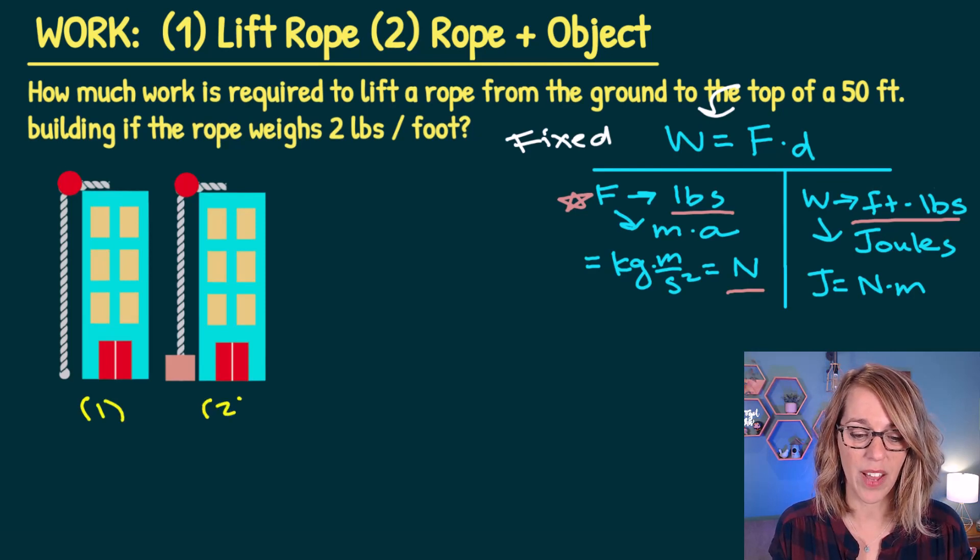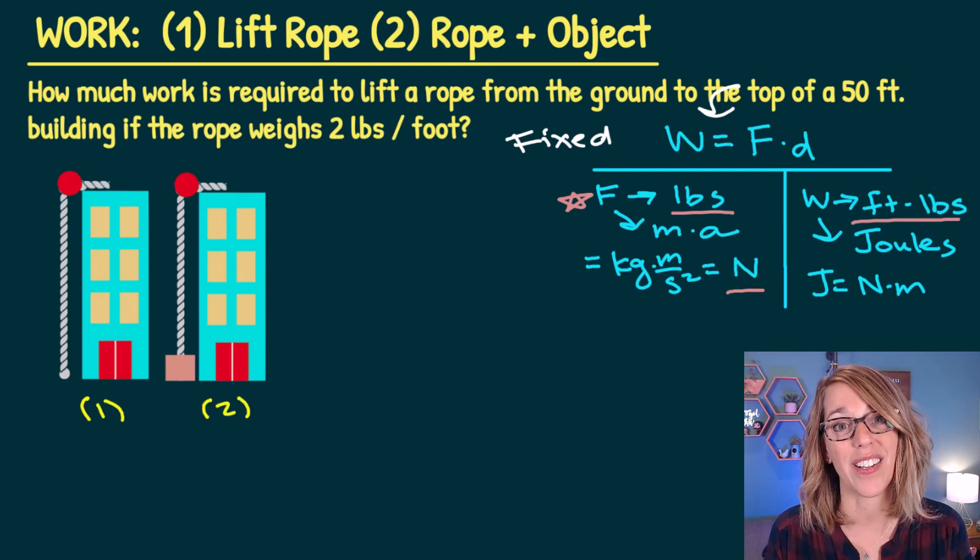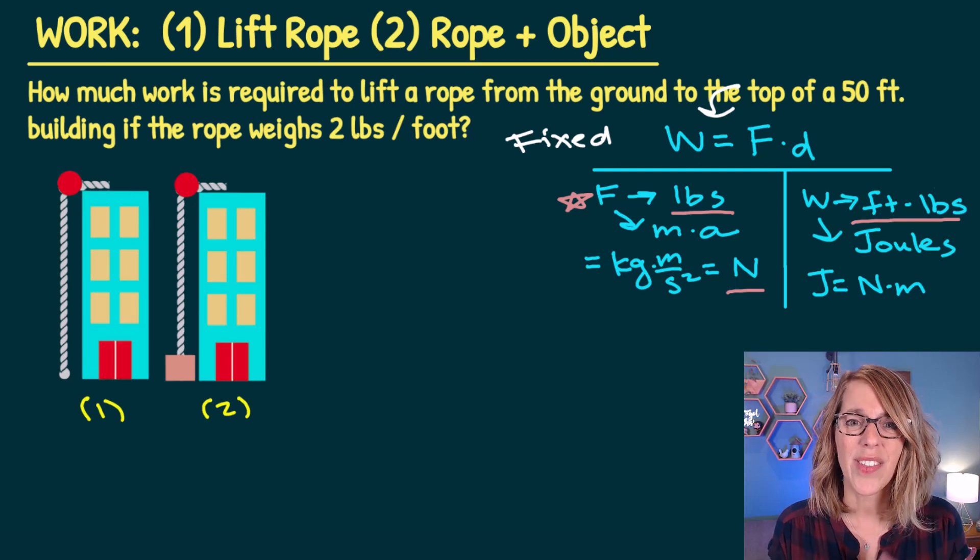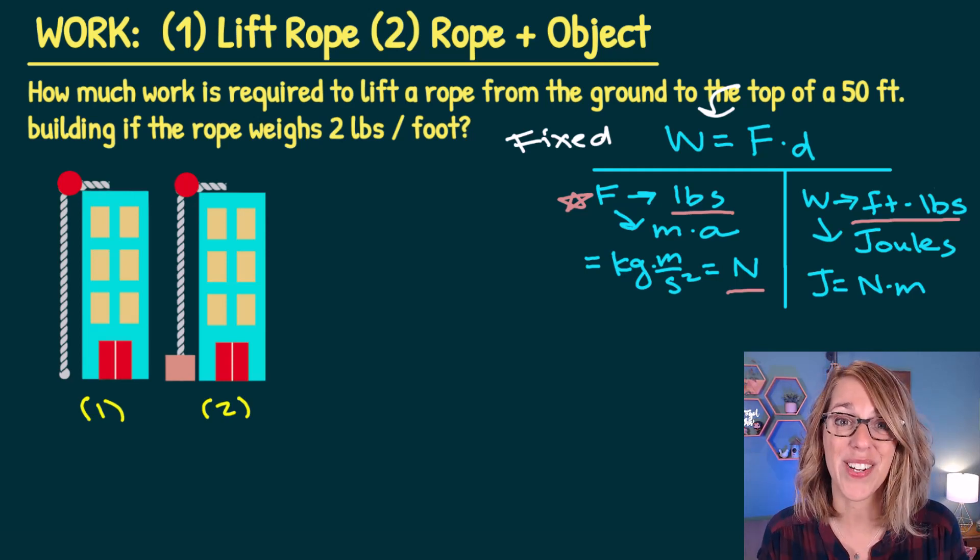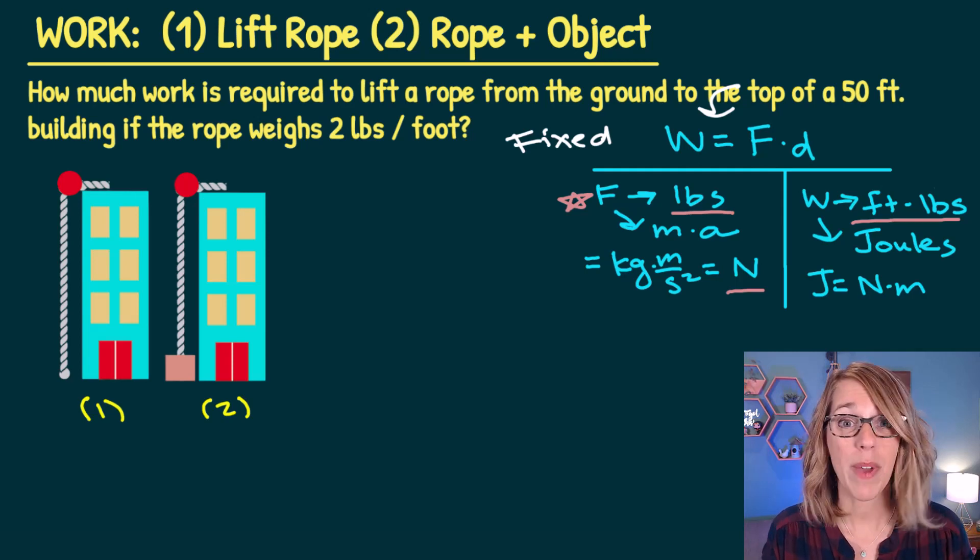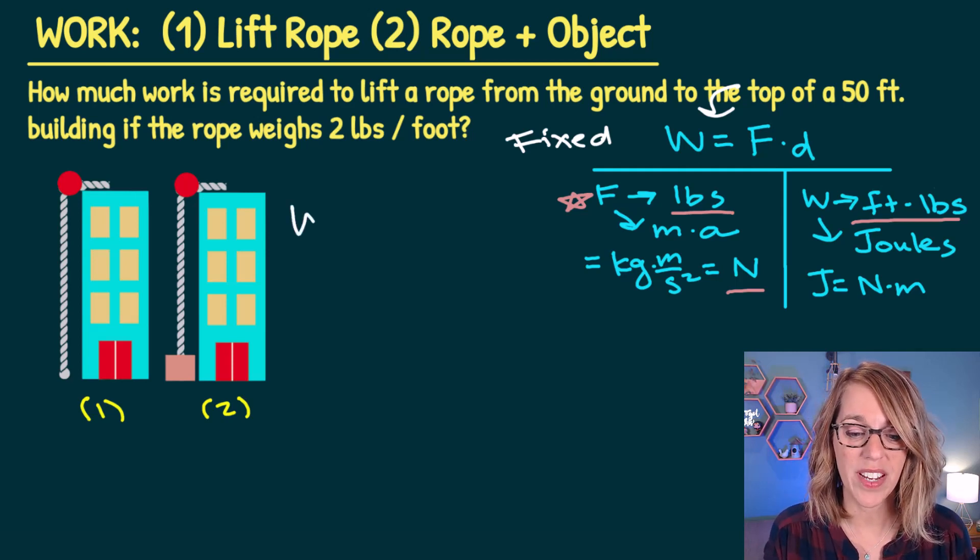And in the second example, I've got a rope with a box attached to it. So that rope varies in weight. The longer the rope, the heavier the rope is. When my force or weight varies, we need some calculus.